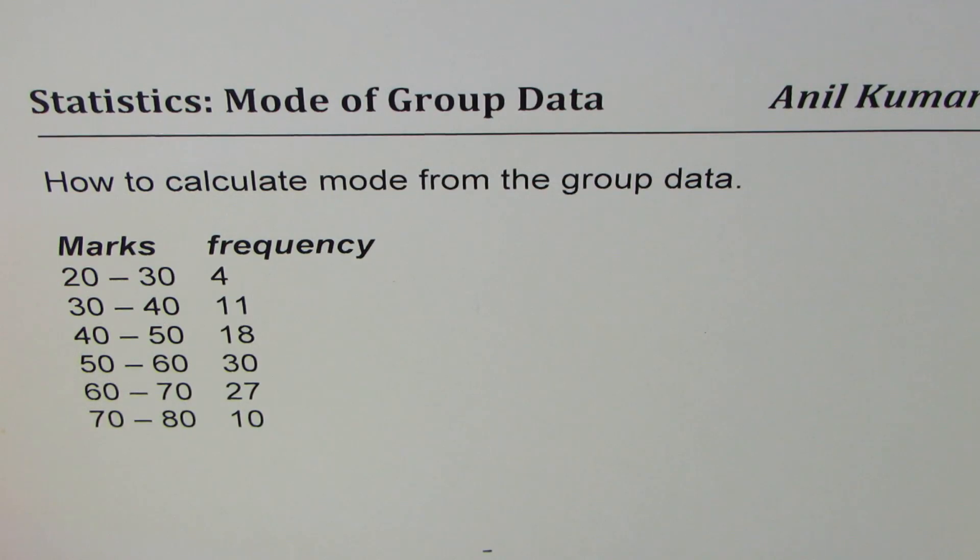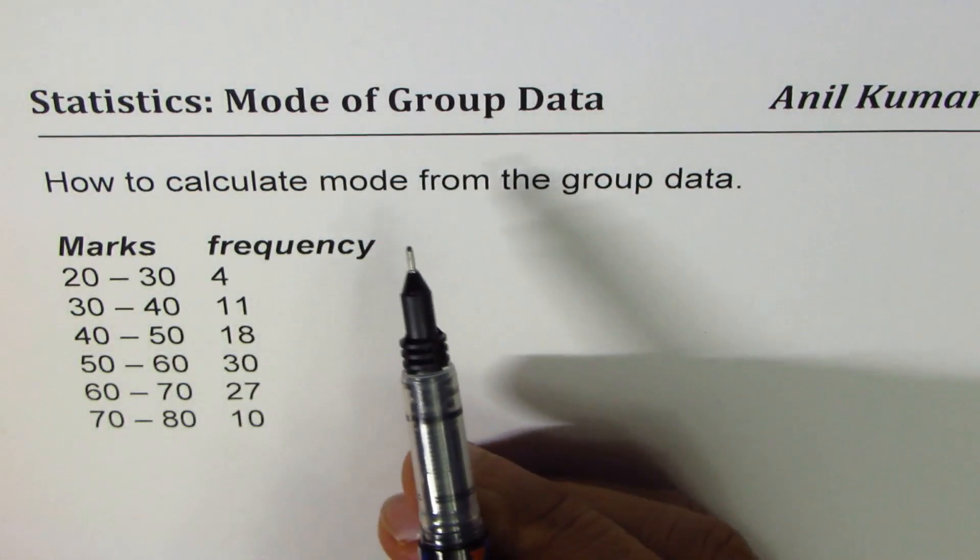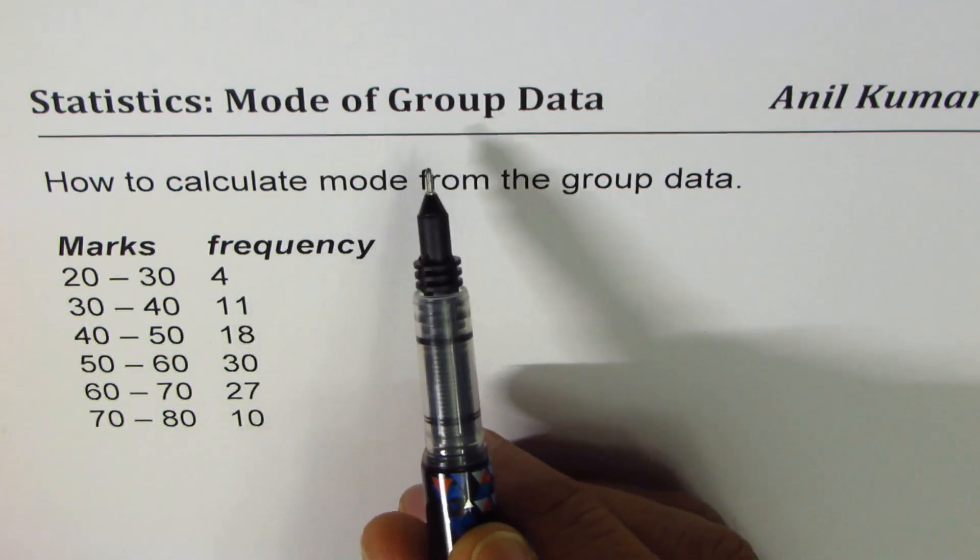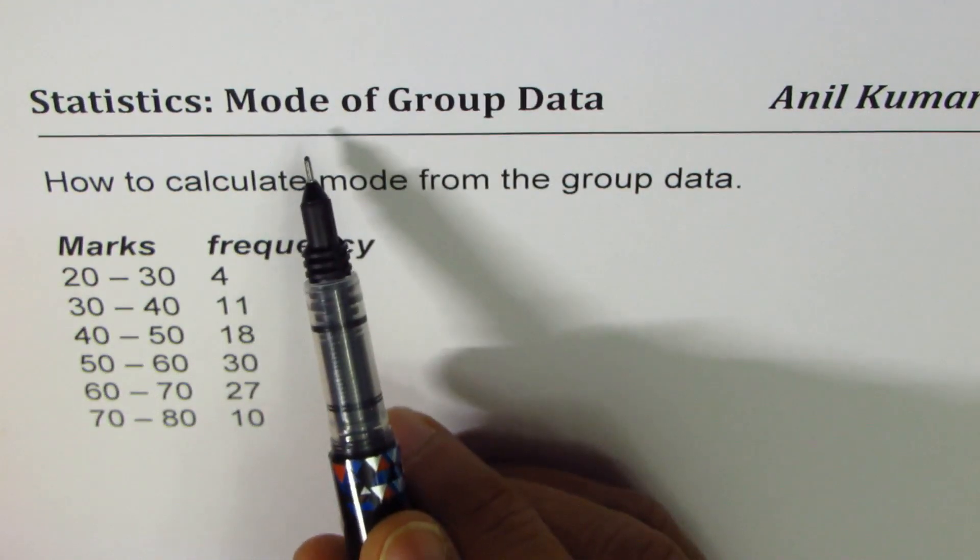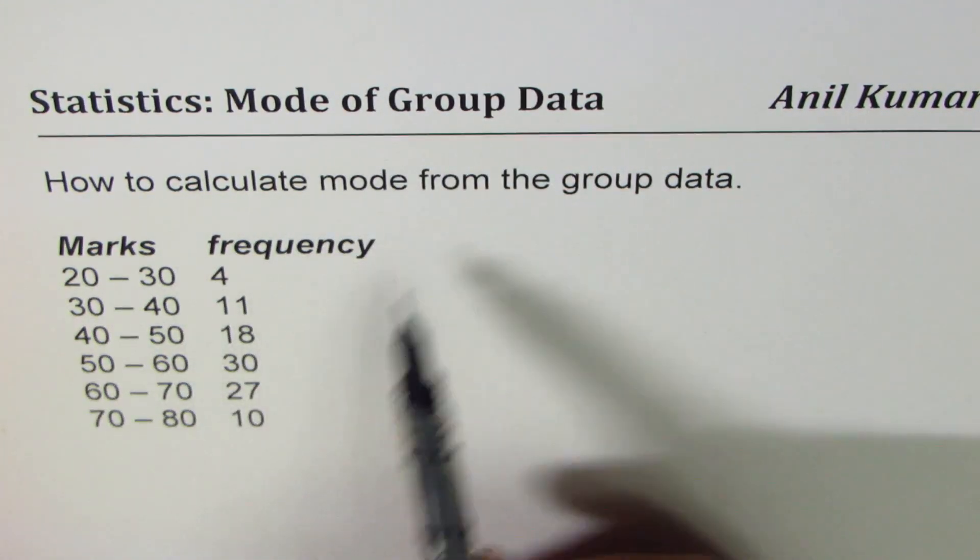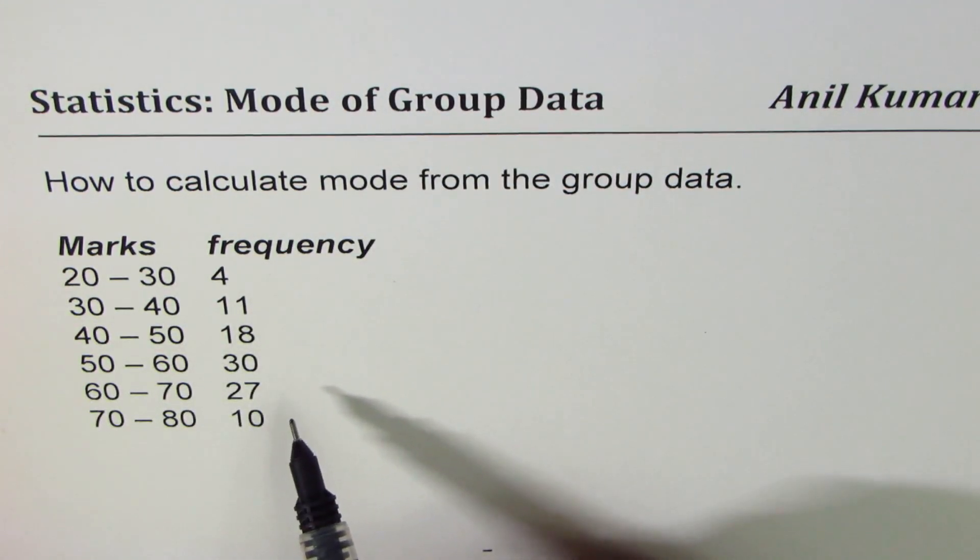Now I've taken up an example from one of my previous videos where we have found mean, mode, and median for grouped data. Actually, we found modal class not the mode, and therefore in this video we'll talk in detail about the method of finding mode from the grouped data.